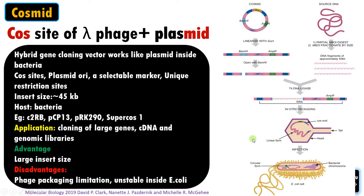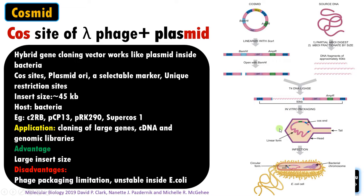Inside the bacterium, the cos sites — cohesive ends with single-stranded sticky ends — combine to form a circular DNA molecule just like a bacterial plasmid, so cosmid acts as a plasmid inside bacteria. The insert size is 45 kb and the host is bacterium. Examples include pRK290 and SuperCos1. It is good for cloning large genes and widely used in making cDNA and genomic libraries. The advantage is a large DNA insert size compared to plasmid and phage vectors. The disadvantage is a maximum insert size of 45 kb due to phage packaging limitations, and cosmids are often unstable inside E. coli.